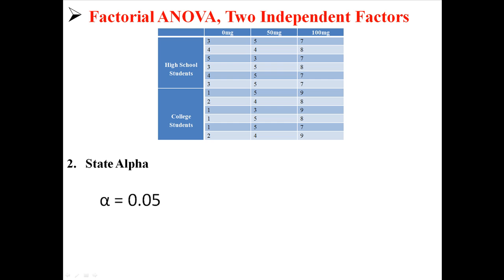Next we're going to state our alpha, which as I said is 0.05. It's pretty much always 0.05. Next we're going to calculate the degrees of freedom. We're going to have five different degrees of freedom to calculate here.